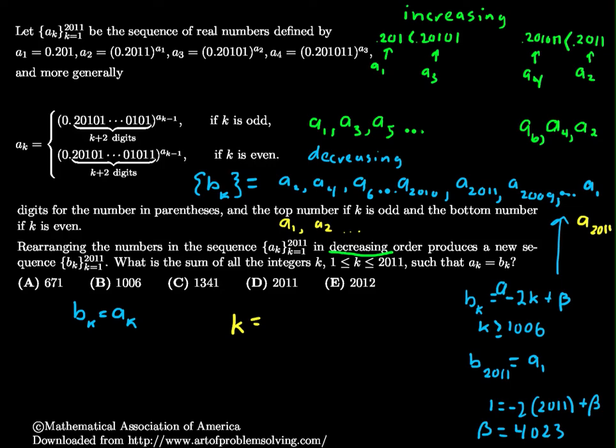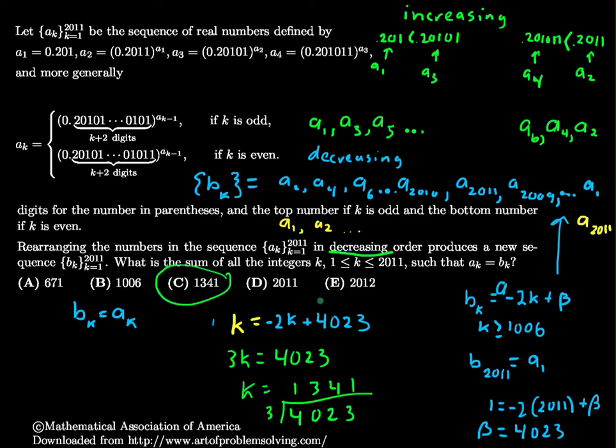And I need to solve the equation now for when k equals negative 2k plus 4023. This k right here is saying when I count this way, this negative 2k plus 4023 is saying as I get the odd ones going that way, I figure out when they are the same. And that happens, add 2k to both sides, so I get 3k equals 4023, divide by 3. I don't feel like messing it up in my head, so that of course is 1341, which magically is answer choice C. I hope that made sense.